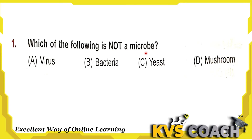Let's start with the first question: which of the following is not a microbe? A microbe is an extremely small living thing that can be seen only by microscope — we can't see it with our naked eyes. Option A is virus — it is a microbe. Option B is bacteria — also a microbe. Option C is yeast — also a microbe. Option D is mushrooms — yes, we can see mushrooms and we can eat them.